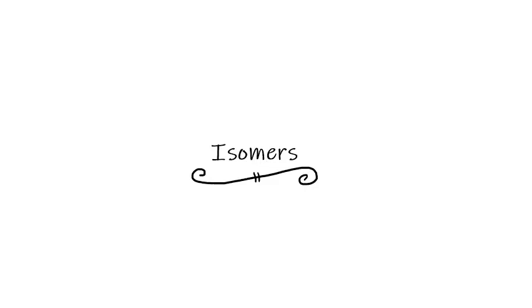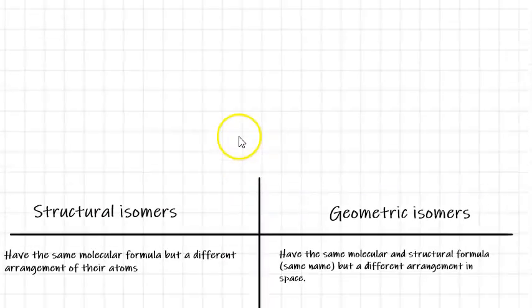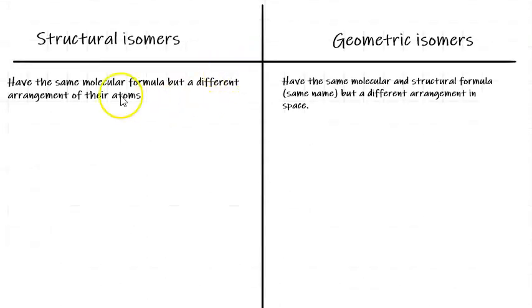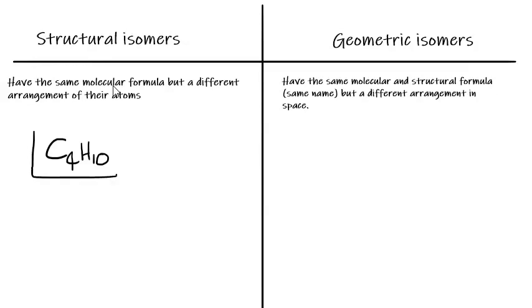In this topic we're just looking at two different types of isomerism. The first type is structural isomers. A structural isomer is a compound — or two compounds or more — that share the same molecular formula but have a different arrangement of their atoms or a different structural formula. If we take C4H10 for example, there are different ways that we could show this compound.